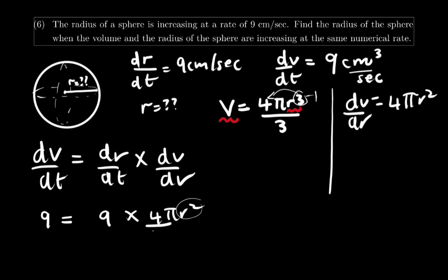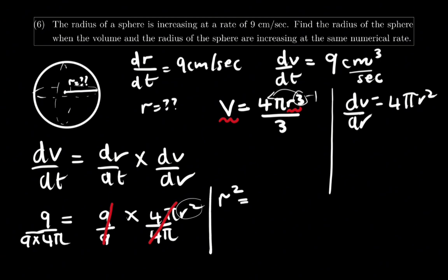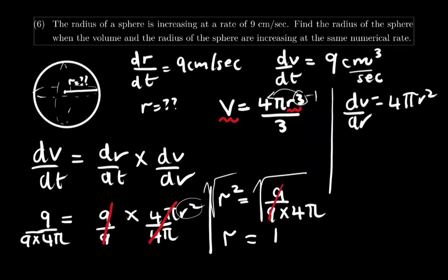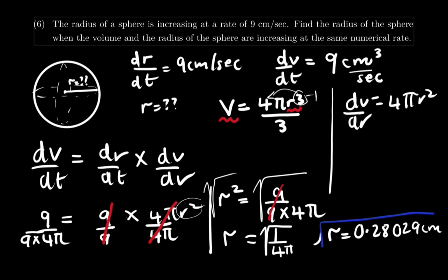To isolate the radius, divide both sides by 4 pi and by 9. The 9s cancel out, giving r squared equals 1 over 4 pi. Taking the square root of both sides, the radius equals the square root of 1 over 4 pi, which calculates to approximately 0.28 cm.